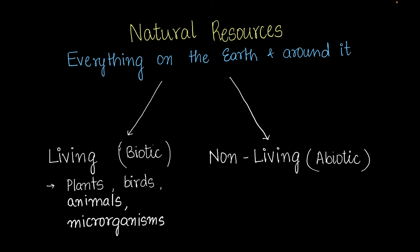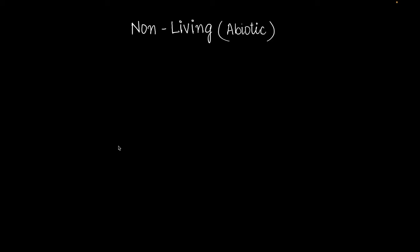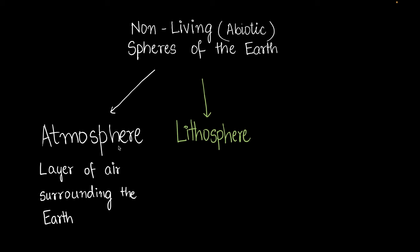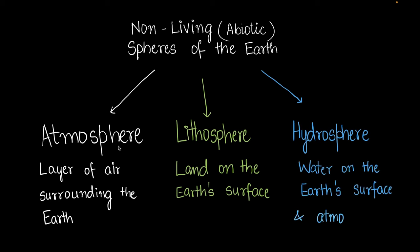The non-living category can be further categorized into three spheres. The first sphere is the atmosphere — basically the air that surrounds the earth. The second is the lithosphere — the land on the earth's crust. The next is the hydrosphere — hydro meaning water — so this is all the water on the earth's surface and in the atmosphere.